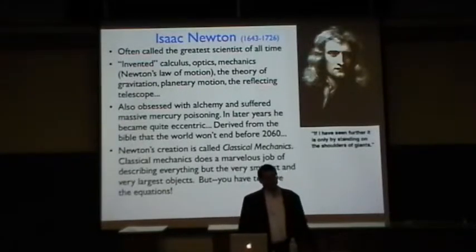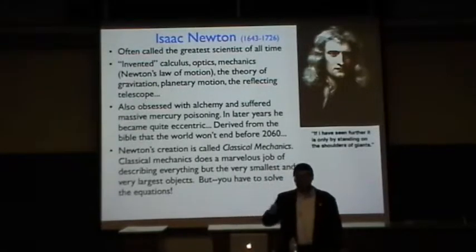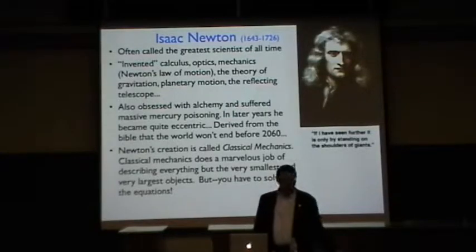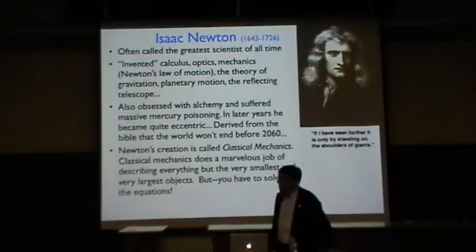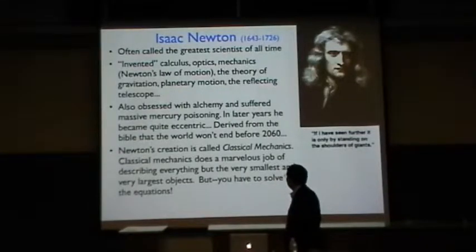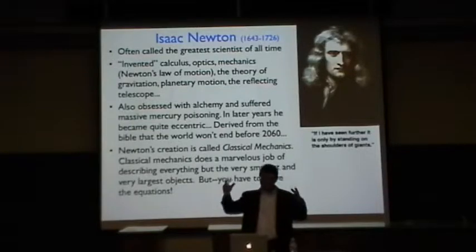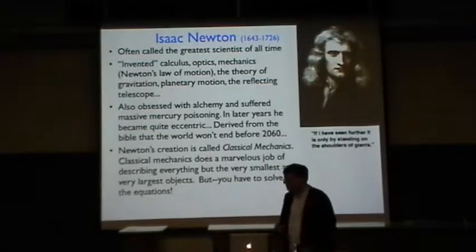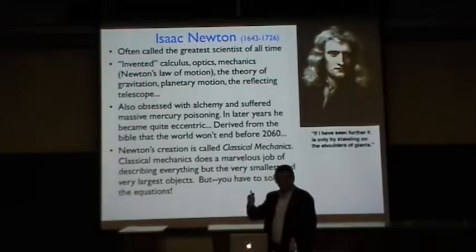He was also obsessed with alchemy, the turning of lead into gold. He worked on that a long time. He didn't know that it wasn't possible. As a consequence, it was discovered after his death that he had suffered massive mercury poisoning and had become rather eccentric. He was interested in occultism. An interesting thing is he derived from an analysis of dates and things in the Bible: the world won't end before 2060.